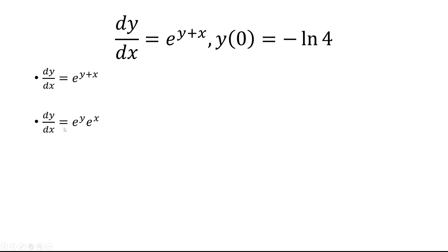So let's multiply the dx over, and then divide by e^y. When I divide by e^y, that just turns into e^(-y). So I have e^(-y) dy equals e^x dx.